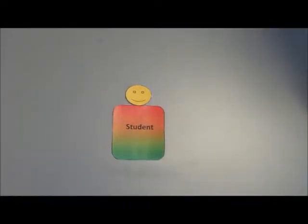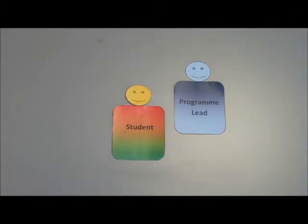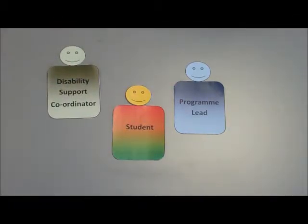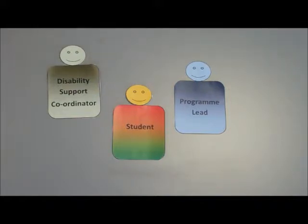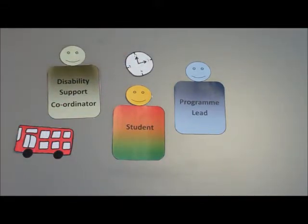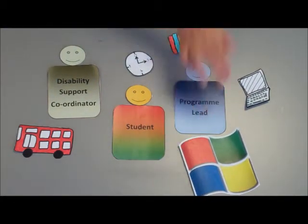The student is of course at the centre of all this. The Program Lead and the Disability Support Coordinator are always there for the student. They can meet with them when they need to — it may be that they have a regular meeting with the Disability Support Coordinator and more ad hoc meetings with the Program Lead as necessary. These people ensure that students have everything they need for their time at college, making sure they have the best possible learning experience.